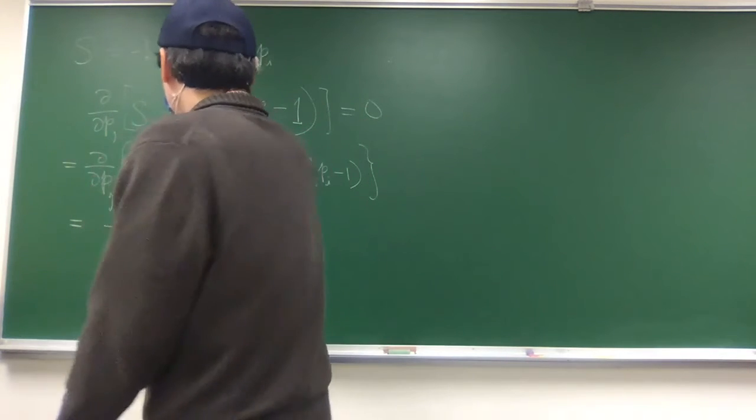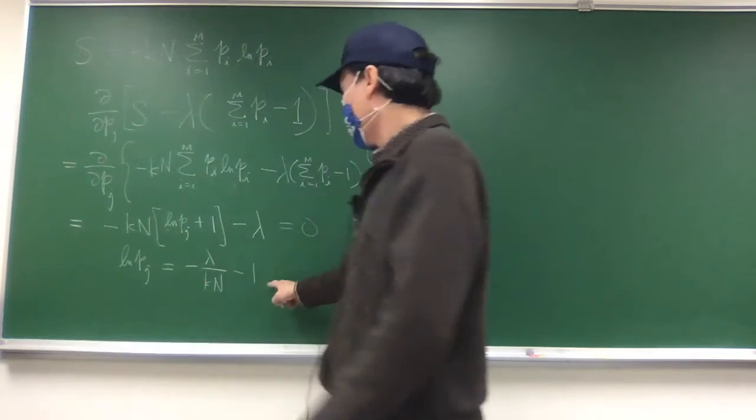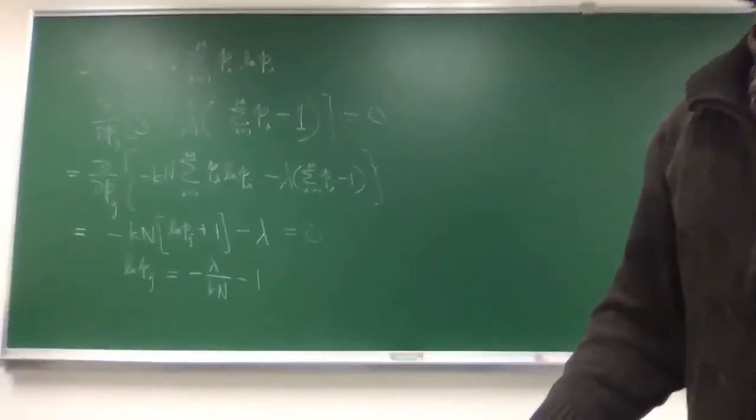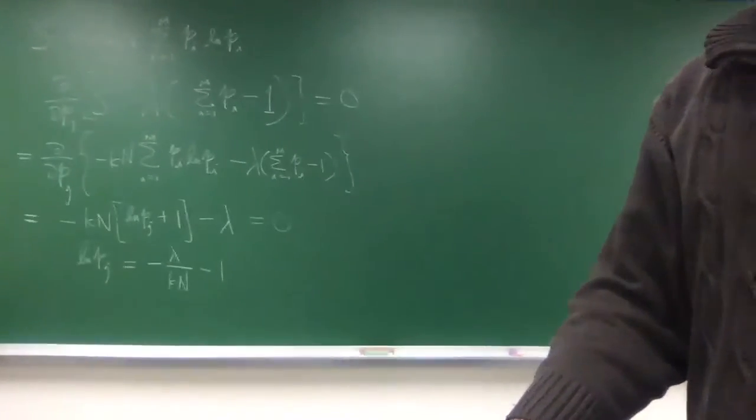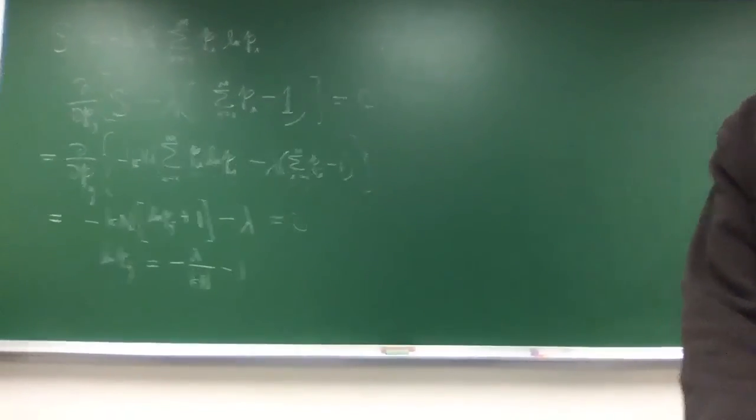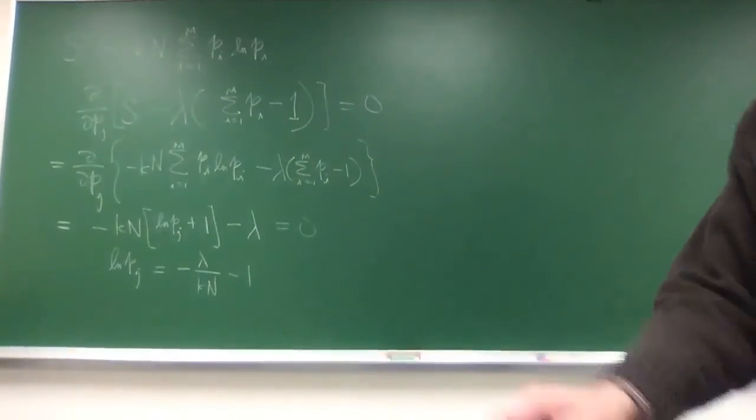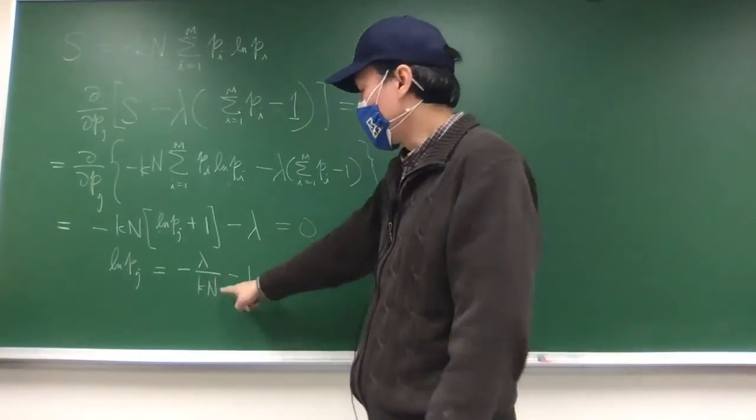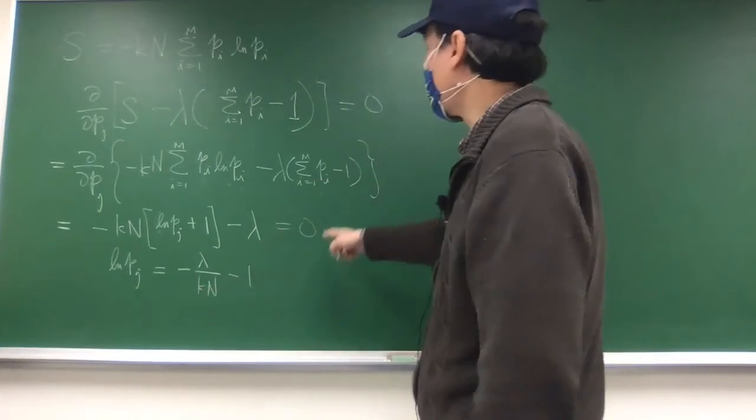And quite obviously, this doesn't depend on j. Every p sub j is the same, and basically it's a constant. Lambda is a constant, n is a constant, everything is a constant.